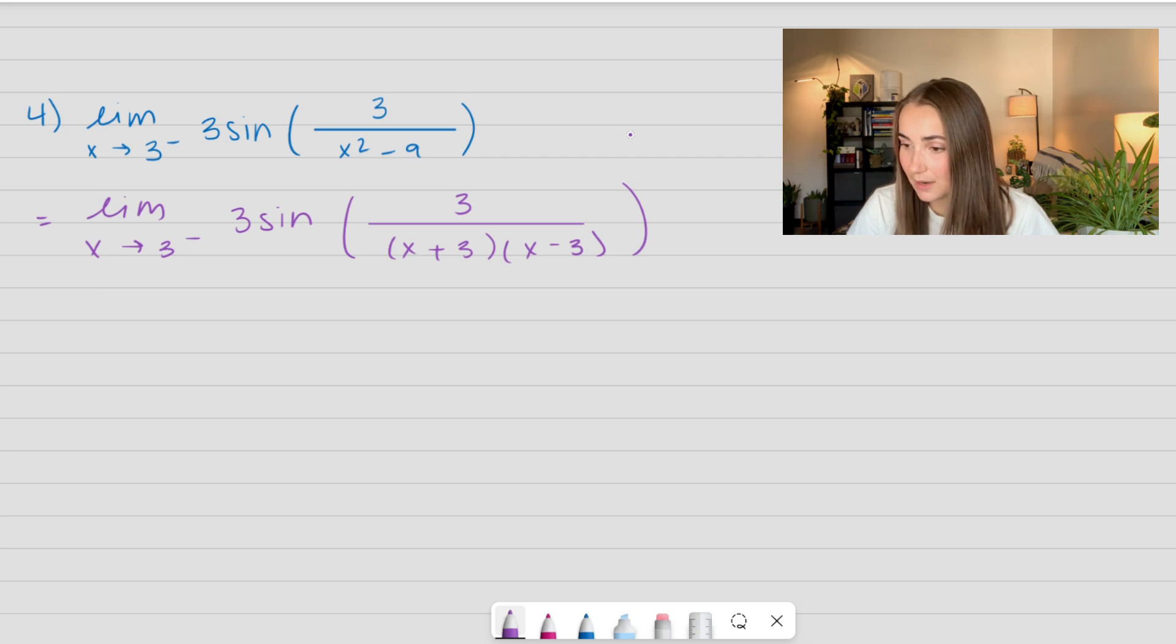And I can see as I approach 3 is going to approach 1 over 0, which is illegal, right? We cannot have this happening. Big no-no. So now think about which side of 0 are we approaching.